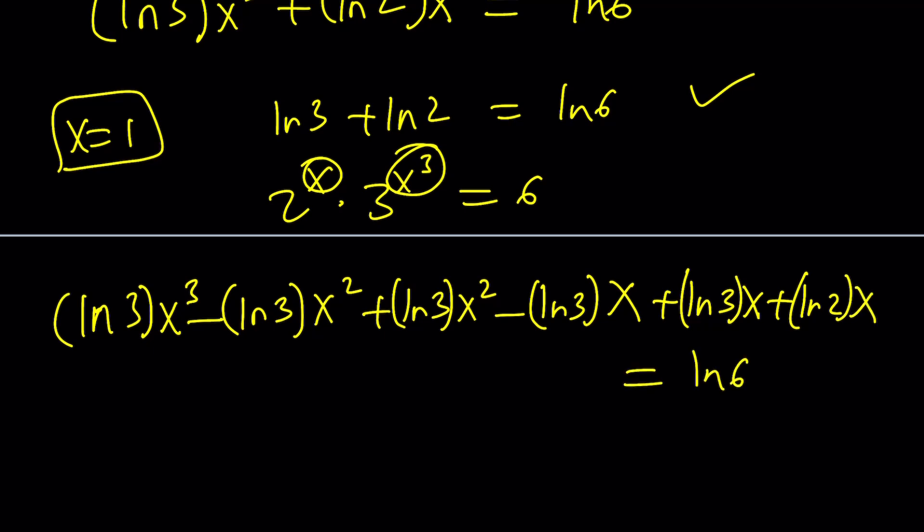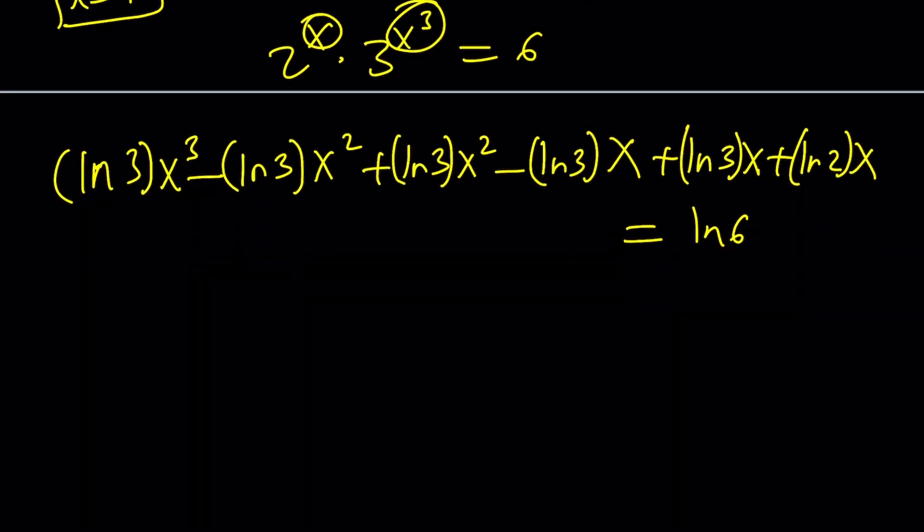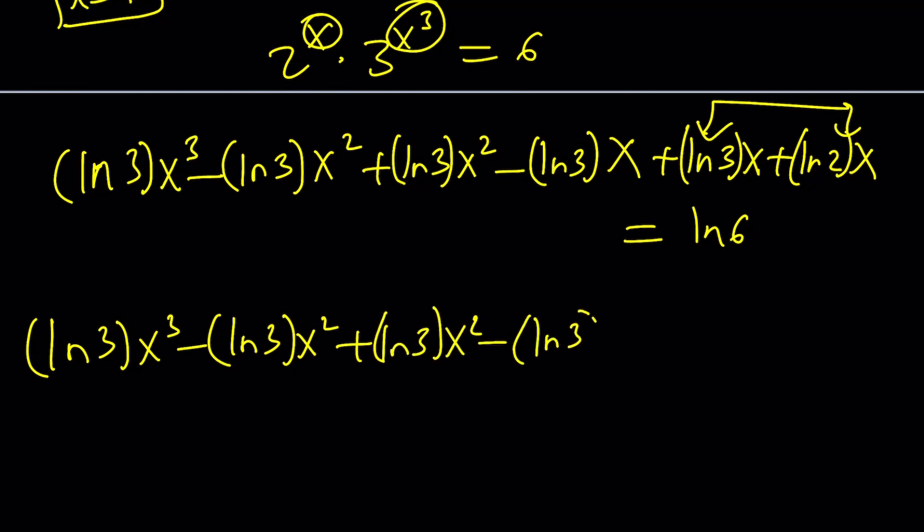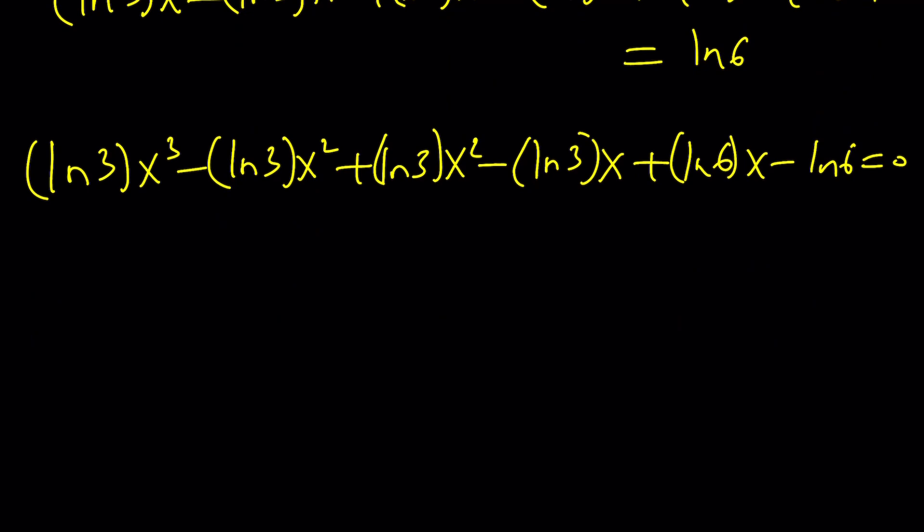And then this will be followed by this. And then of course by this because that's one of the terms. And finally, this is equal to ln 6. Let's go ahead and arrange this a little bit. First of all, these two can be combined into ln 6. So I can write this as ln 3 times x cubed minus ln 3 x squared plus ln 3 x squared minus ln 3 times x plus ln 6 times x minus ln 6 equals 0.